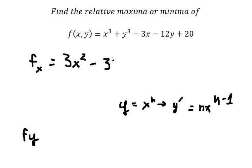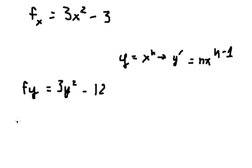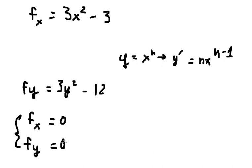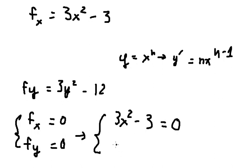Now we find the first derivative of F in terms of Y. This one is about 3Y squared, and this one we have number one. I will set this one and this one equal to zero. So that means Fx equals zero and Fy equals zero.